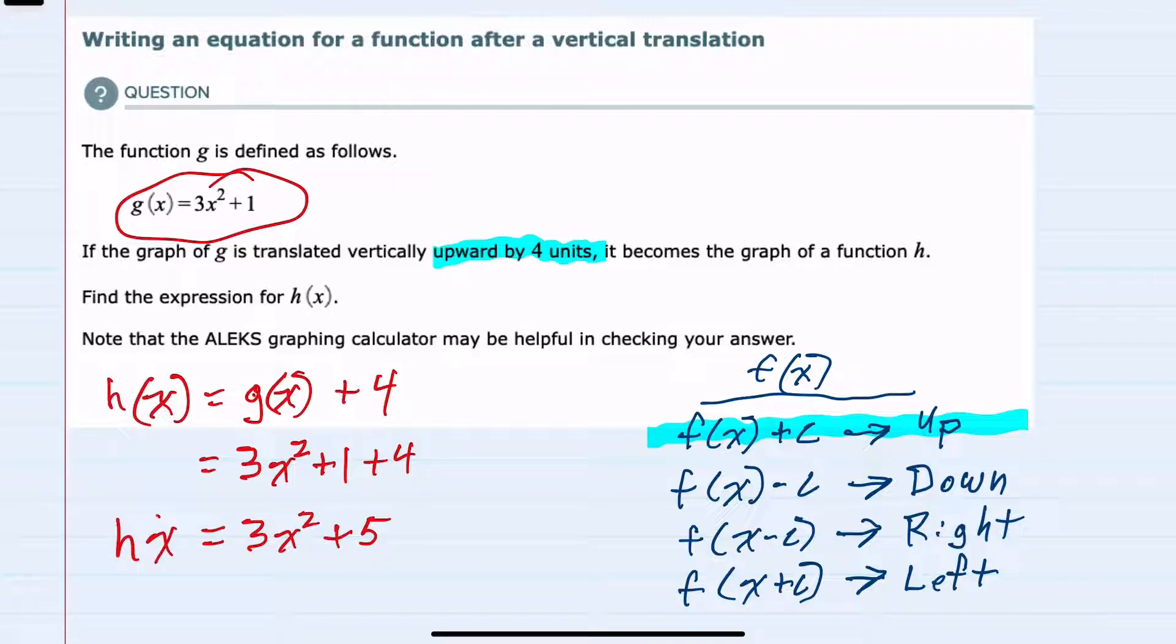So h(x), after translating g(x) up 4 units, is 3x² plus 5.